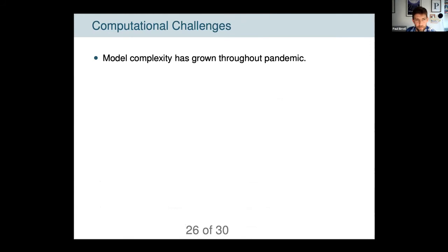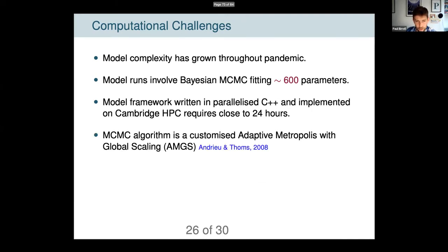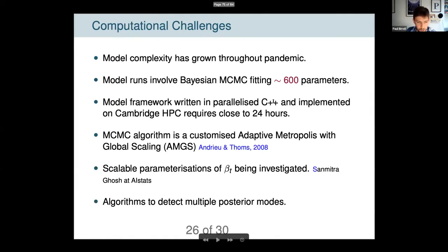Moving quickly through computational challenges: as you've seen, model complexity has grown throughout the pandemic. We're currently fitting over 600 parameters using bespoke parallelized optimized C++ code, and it's still a model that takes close to 24 hours to run. We use a customized adaptive Metropolis-within-Gibbs global scaling MCMC algorithm. Ongoing work includes scalable parameterisations of beta to make it more efficient without exploding the parameter space. Work by Samitra will be presented at the AI Stats conference. We're also developing algorithms to detect multiple posterior modes — we're not always guaranteed that different MCMC chains will converge to the same place, so we run multiple chains and identify the best.